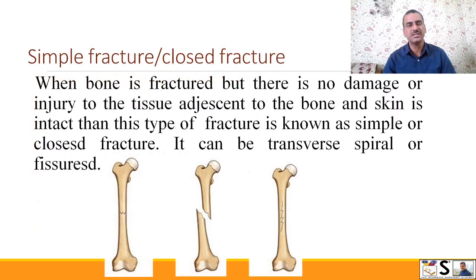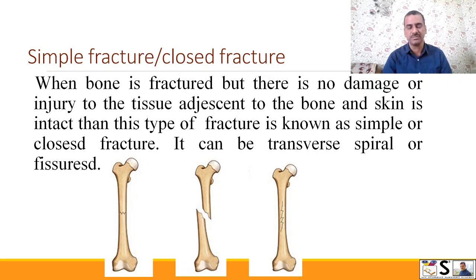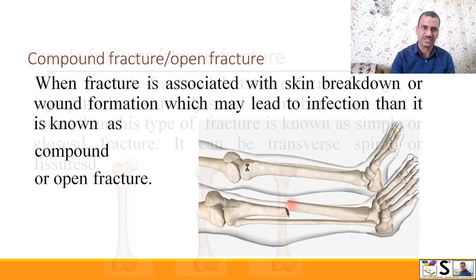First is simple fracture. When the bone is fractured but there is no damage or injury to tissue adjacent to the bone and the skin is intact, then this type of fracture is known as simple or closed fracture. It can be transverse, oblique, or fissured.